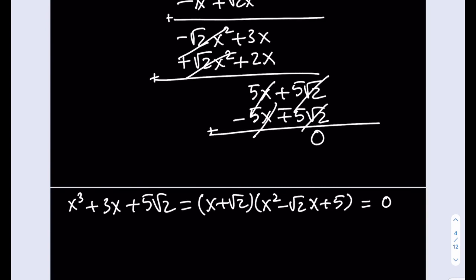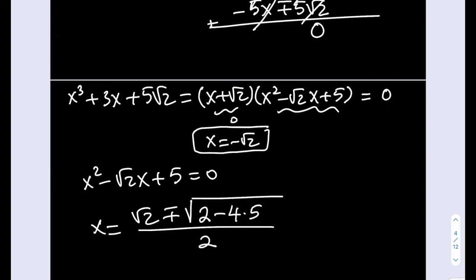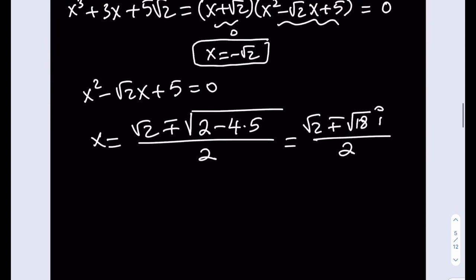So the original equation factors as (x + √2)(x² − √2·x + 5) = 0. We already know x = −√2 is one solution. For the quadratic x² − √2·x + 5 = 0, using the quadratic formula: x = (√2 ± √(2 − 20)) / 2 = (√2 ± √(−18)) / 2 = (√2 ± 3√2·i) / 2. So the cubic has one real solution x = −√2 and two complex solutions. Those are all the solutions.